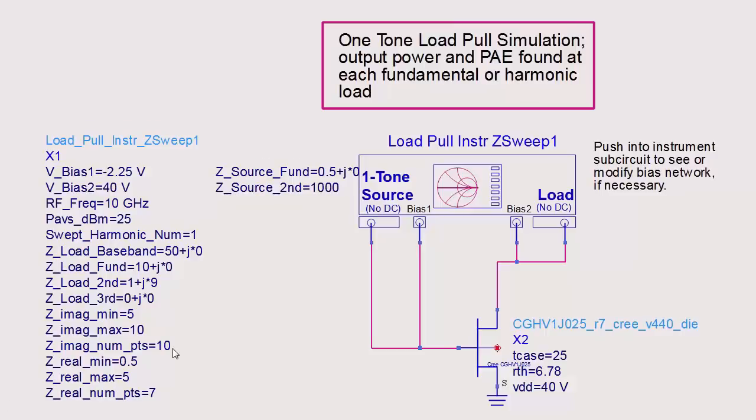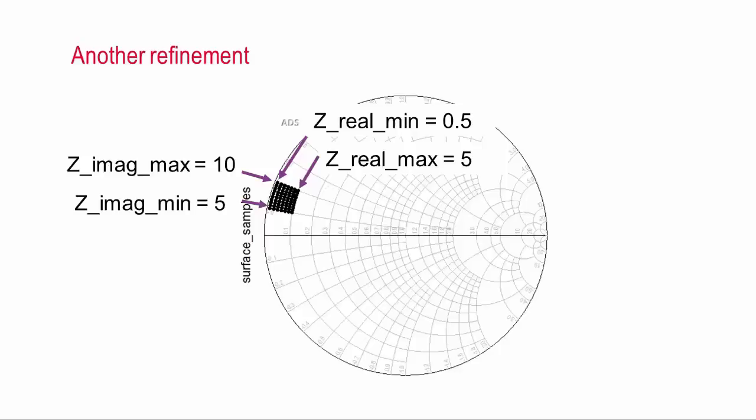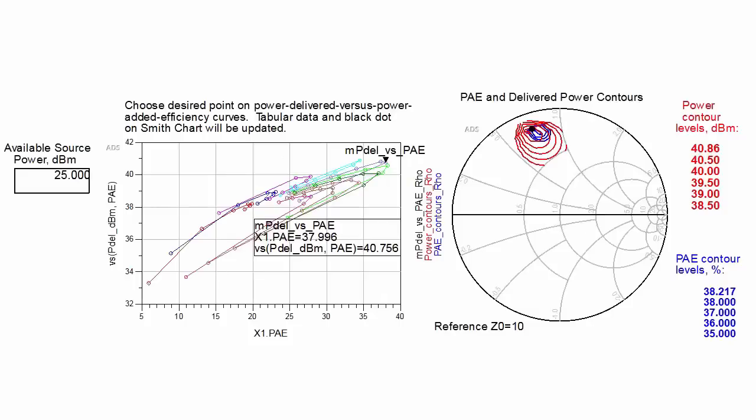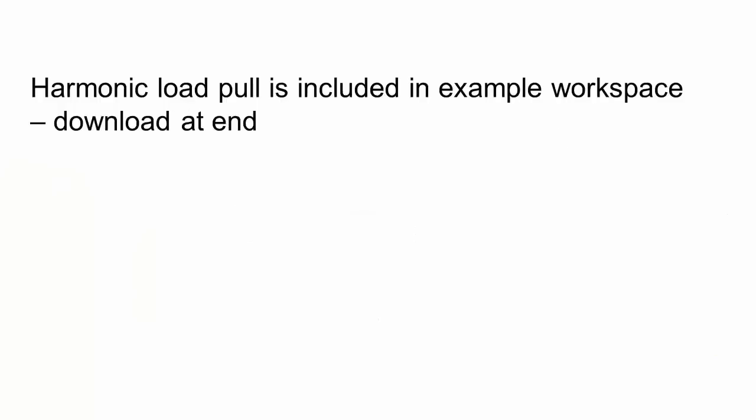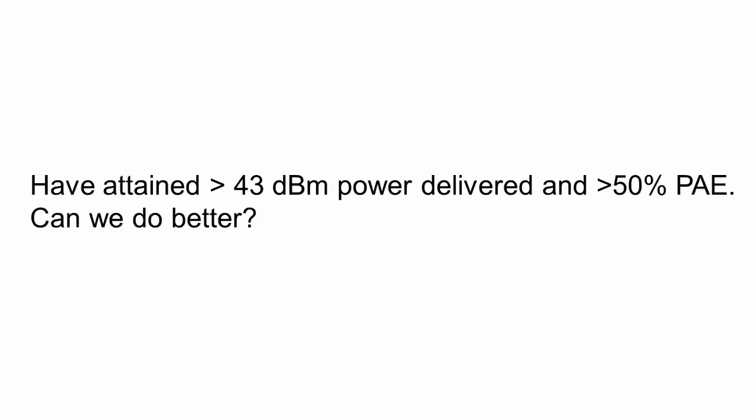Now we will refine the sampled region again and increase the available source power. This shows the smaller region to be sampled. Note that here I have changed the Smith chart reference impedance from 50 to 10 ohms. Increasing the available source power to 30 dBm we get greater than 50% PAE. Potentially better performance could be obtained by sweeping the second and third harmonic impedances. Pretty quickly we have attained good results and we have determined the optimal region of the Smith chart to sample.